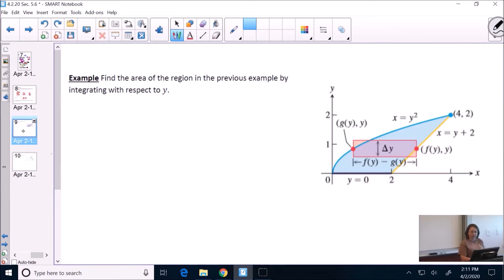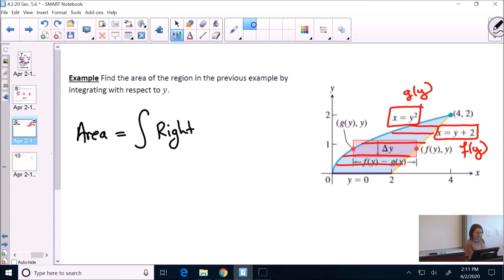Alright, so we're integrating with respect to y. Why are we integrating with respect to y? Well, if you draw a line at any particular y value, the horizontal line is always bounded on the left by the blue and on the right by the yellow. Notice they have already written the function as x equals a function of y. So this is g of y and f of y. So the area is going to be the integral of the right function minus the left curve.